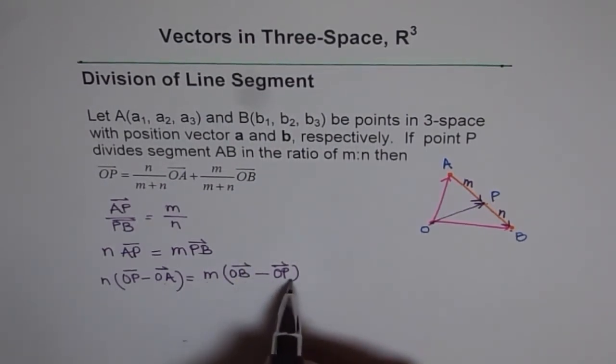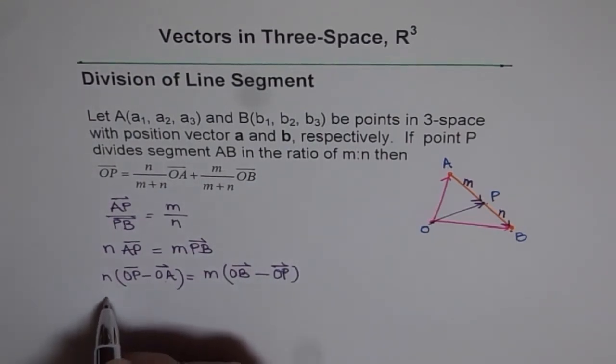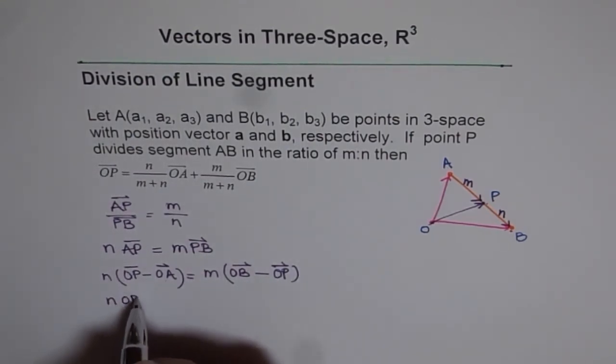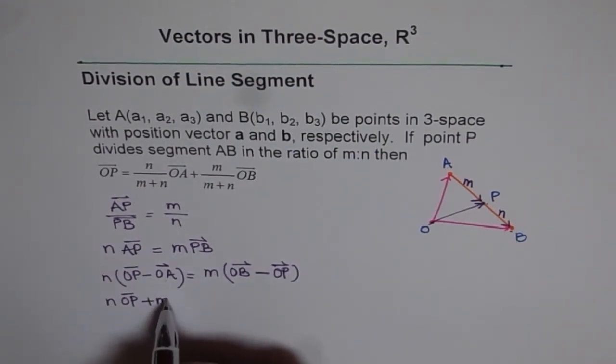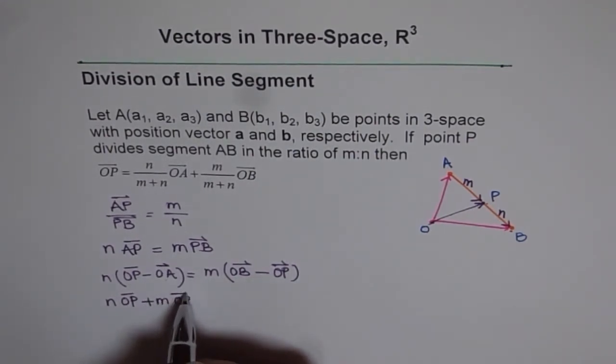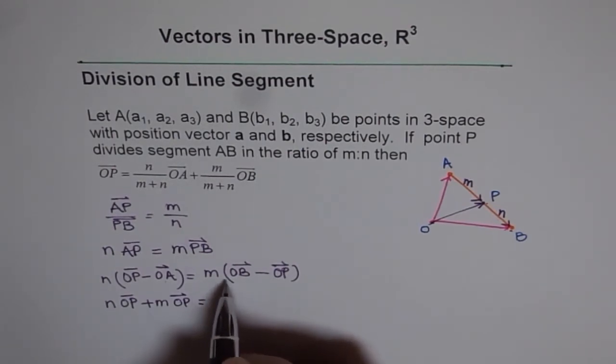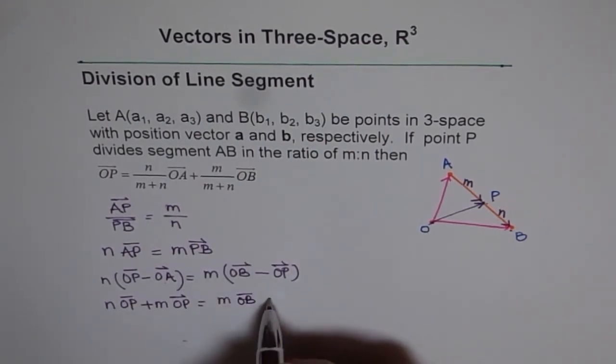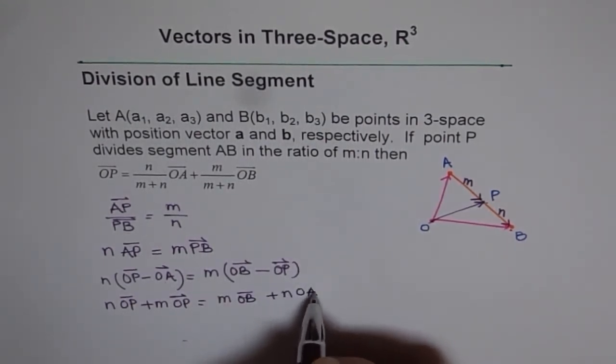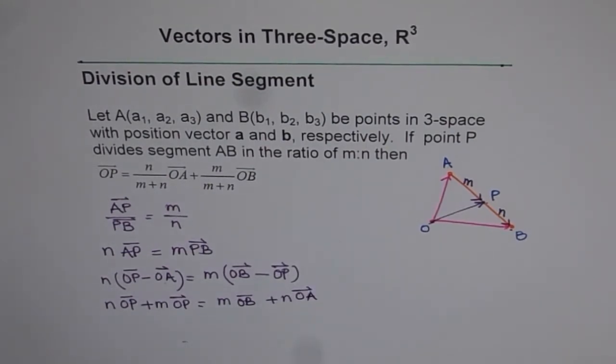Let's bring OP terms on the left. Then we have N times OP. From here, it will be plus M times OP. And then we have here M times OB. And we'll bring this term on that side and get N times OA.